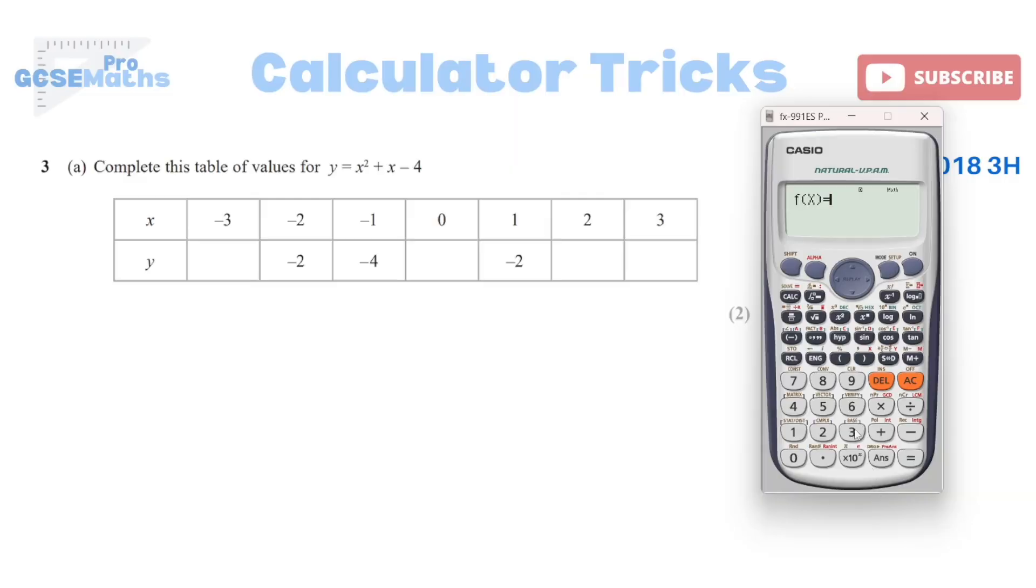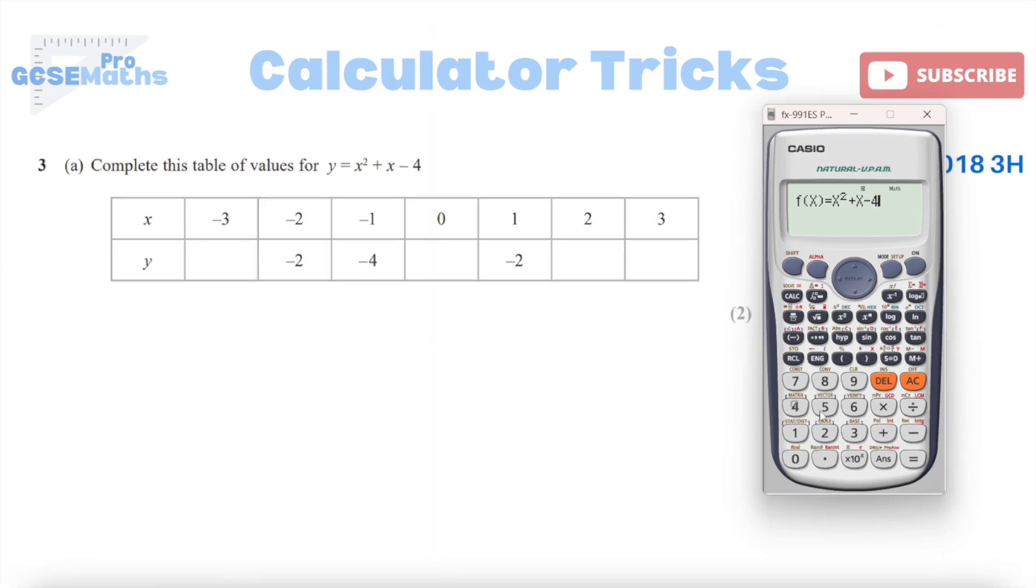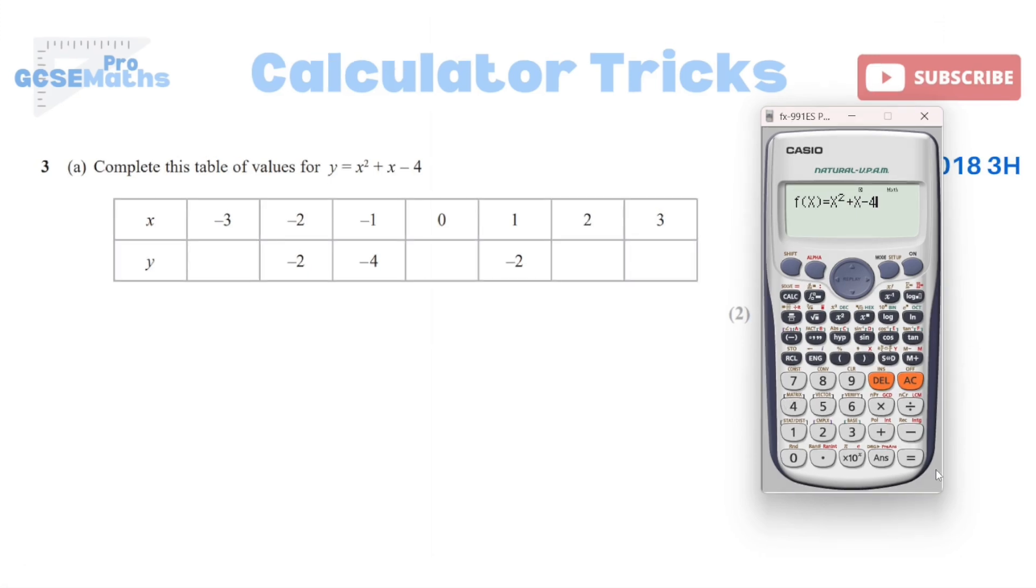On mine it's called mode, and then I choose the number that gives me the option for table. Yours might also be different. I'm then shown something like F of X. You might also see G of X if yours is a newer version. F of X, hopefully you know this already, just basically means Y, doesn't it? Y equals F of X equals. So then you would type in whatever equation you have of the graph. So just make sure you know where the X is on your calculator as well. Obviously just apply squares, add, subtract all of that as normal and type in the whole equation. Once you've got the whole equation, it might bring you onto a different screen if you press equals. Normally it will ask you something like start, end, and step.